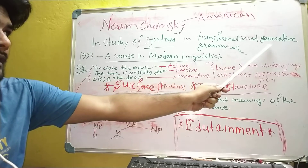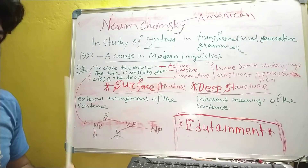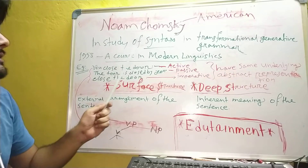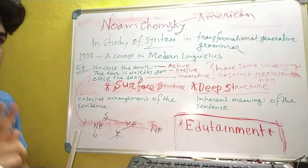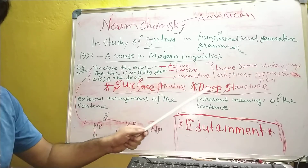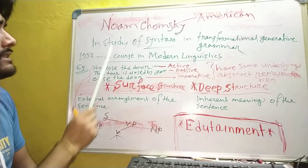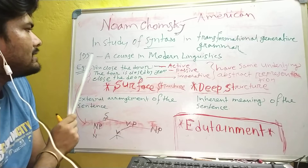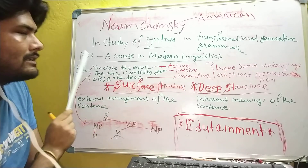In transformational generative grammar, Noam Chomsky, when he was discussing about syntax, gave two structures of a sentence — one is surface structure, another is deep structure. He discussed this as an American linguist, and this book, A Course in Modern Linguistics, was published in 1958.